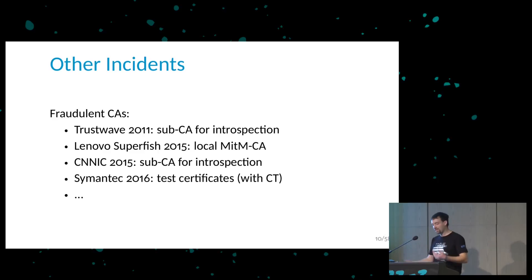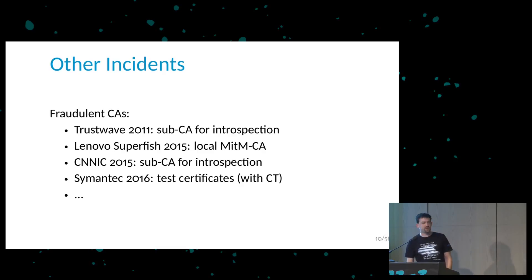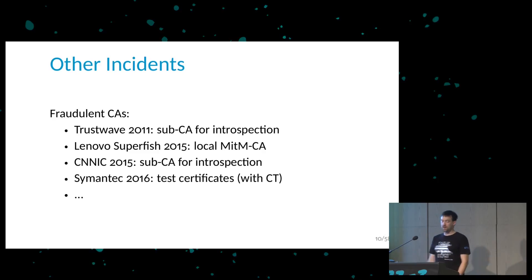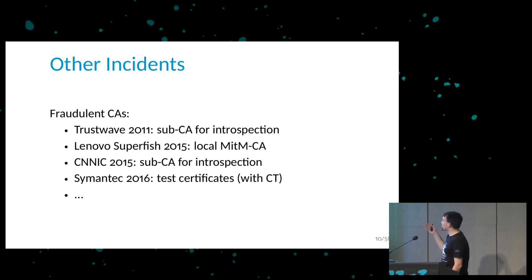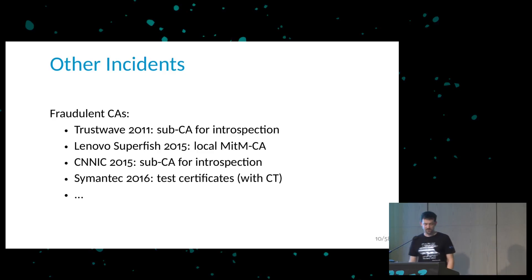Another CA, TrustWave, in 2011 issued a sub-CA certificate. Anyone with a sub-CA certificate can issue a TLS certificate for any domain. They used it for traffic introspection — selling to a company building appliances that can break open network connections for banks, companies, or entire ISPs, so they can look into the traffic of their users.